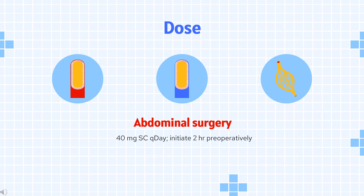For hip replacement surgery, may administer 40 mg SC once daily; initiate 9–15 hours preoperatively, continue for 10 days or up to 35 days postoperatively, or until risk of DVT is reduced significantly, or patient is on anticoagulant therapy. Medical patients with restricted mobility: 40 mg SC once daily, continue until risk of DVT is reduced significantly (6–11 days), or patient is on anticoagulant therapy.